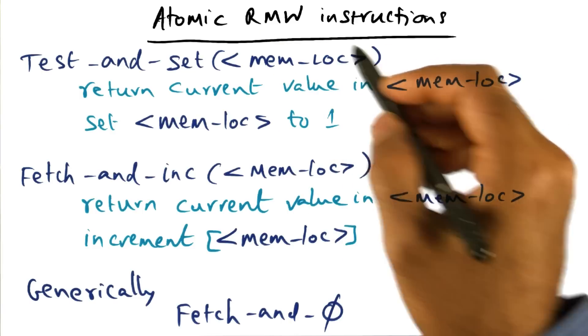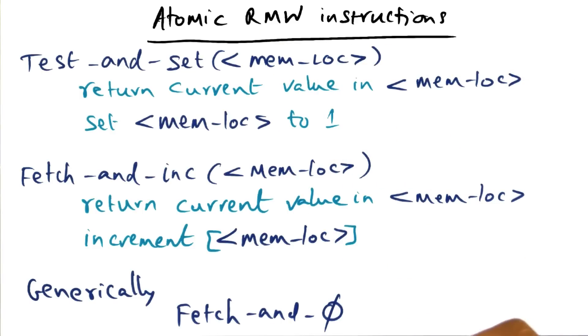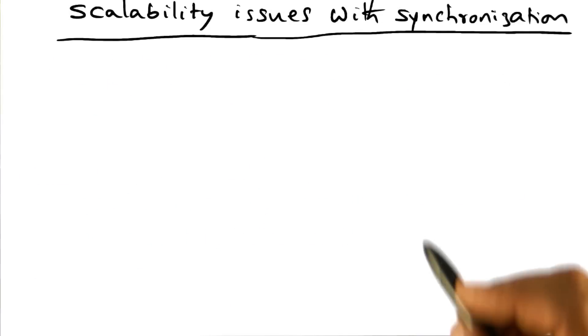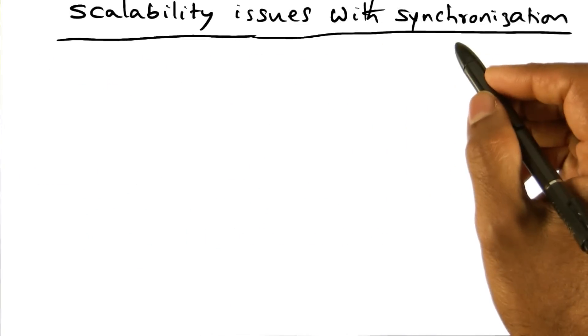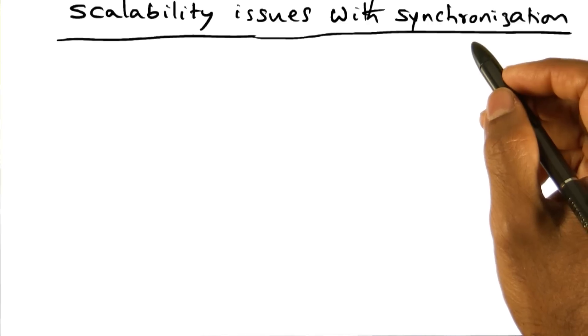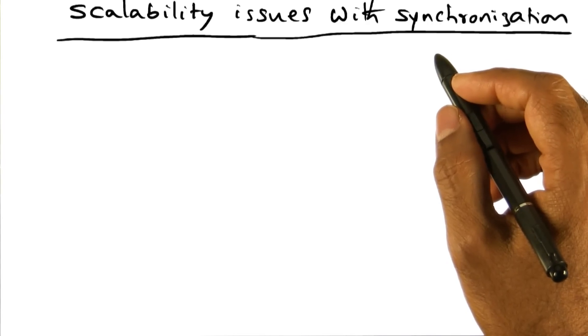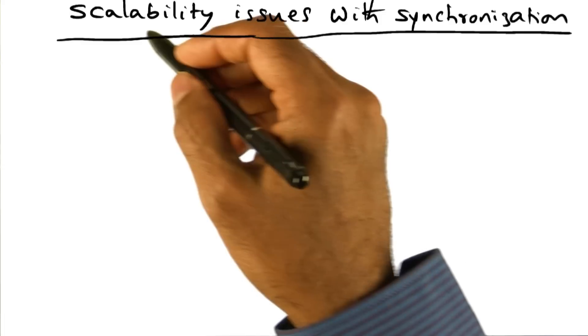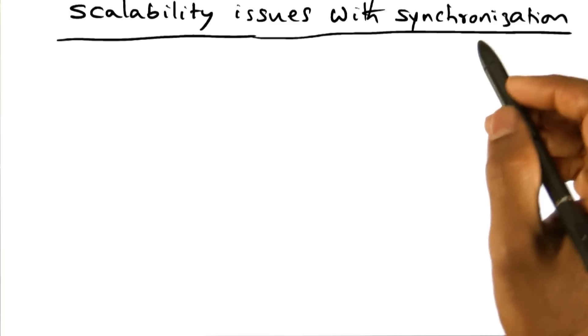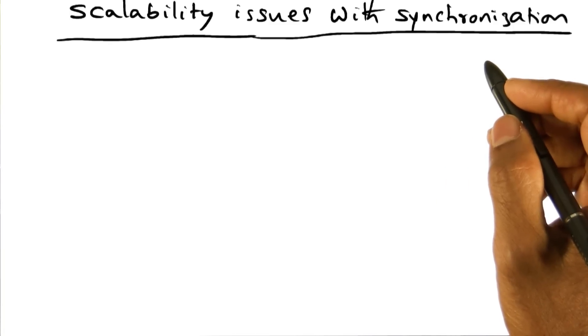Okay, now that we have an atomic read, modify, write instructions available from the architecture, we can start looking at how to implement the mutual exclusion lock algorithms. Now, I gave you of course a very simple version of it. We'll talk more about that in a minute. And I'm sure that in the first project, when you implemented the mutual exclusion lock, you did not care too much about the scalability of your lock implementation. Now, if you are implementing your mutual exclusion lock algorithm on a large scale shared memory multiprocessor, let's say thousands of processes, you would be very worried about making sure that your synchronization algorithms scale. And scalability issue is fundamental to the implementation of synchronization algorithms.